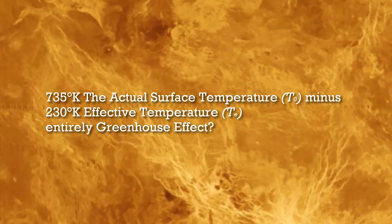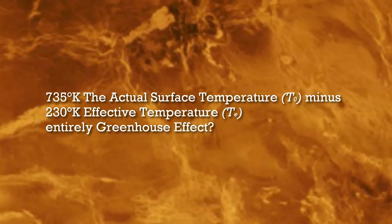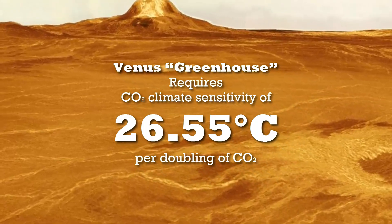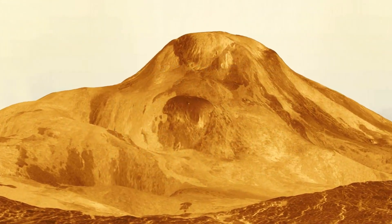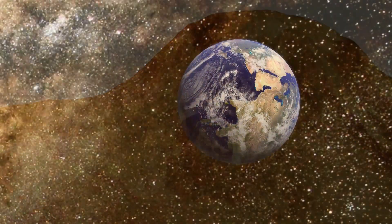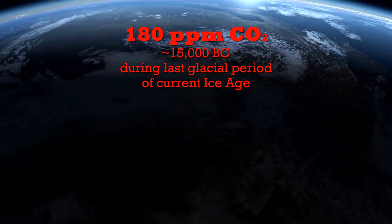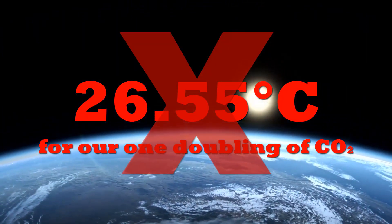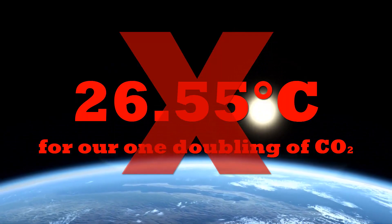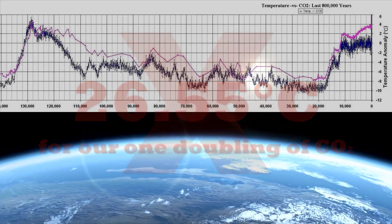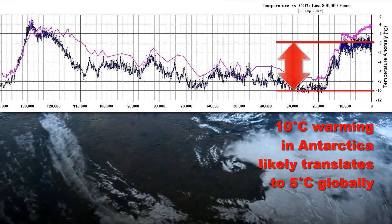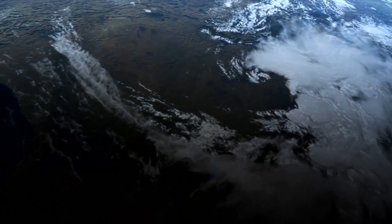On the flip side, if we insist that the difference between the effective temperature T sub E and the actual surface temperature T sub O is caused entirely by the greenhouse effect, we would need a CO2 climate sensitivity of 26.55 degrees Celsius per doubling of CO2. And this truly would show up in our climate record, if it were true. With our Holocene CO2 increase from 180 parts per million to 360 parts per million, we most assuredly did not witness a temperature increase of 26.55 degrees Celsius in the last 15,000 years. The global temperature increase was certainly less than 10 degrees Celsius, and very likely less than 4 or 5 degrees globally.